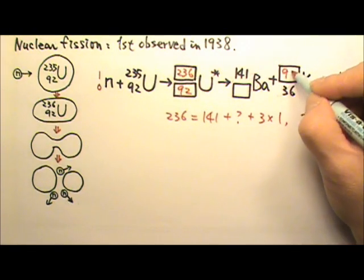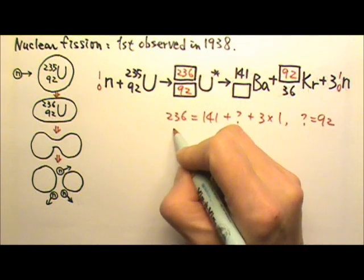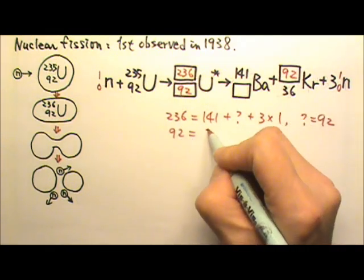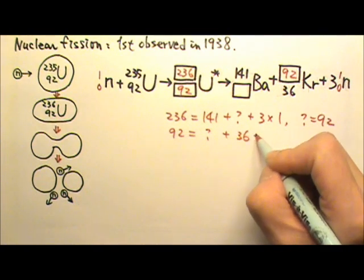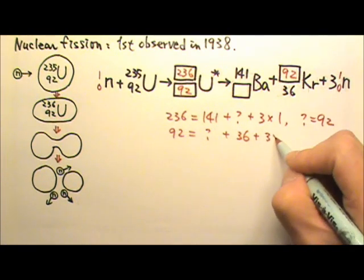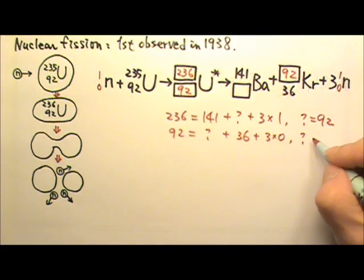And down here, we have 92. And down here, we have 92 equals to the number we're looking for, plus this 36, plus 3 times 0. So the question mark for this equation would be 56.